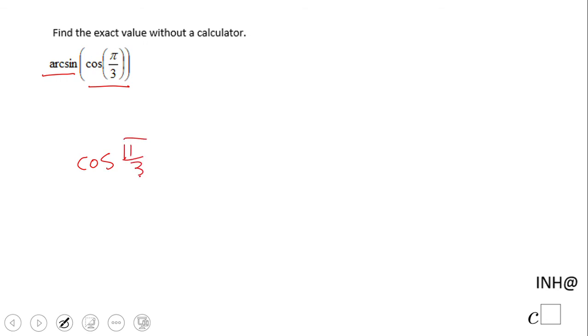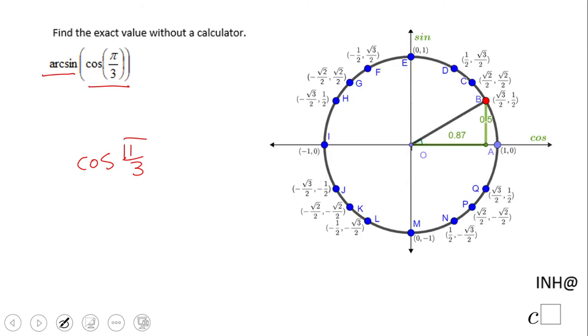In this case, cosine of pi over 3 is what we need to evaluate first. Now cosine of 60 degrees, which is this angle here, equals one half. So we're going to replace the inside function with this value. We're now looking to evaluate arc sine of one half.